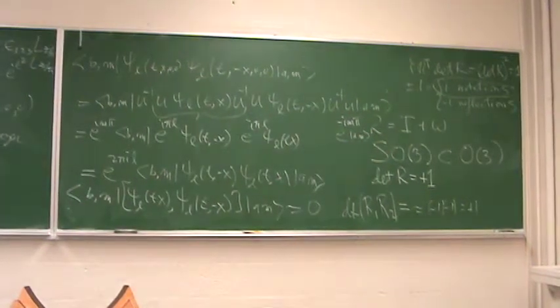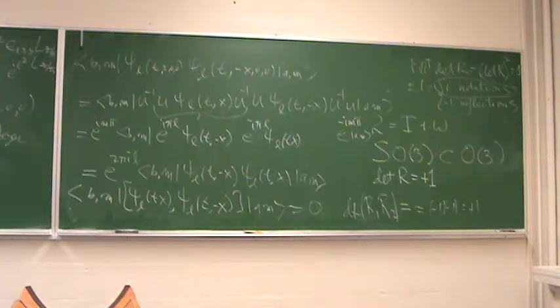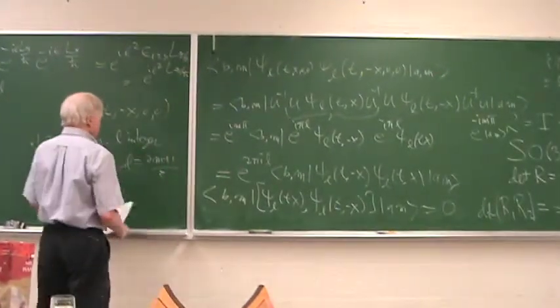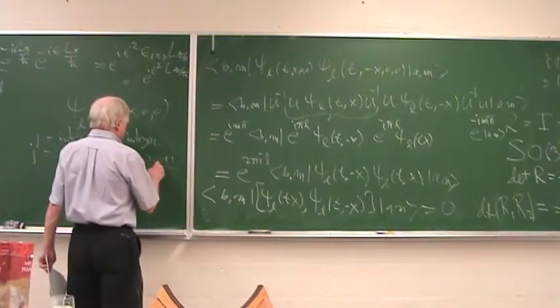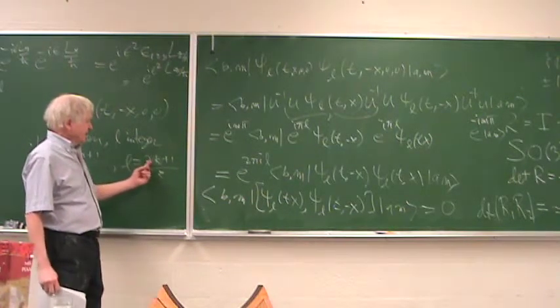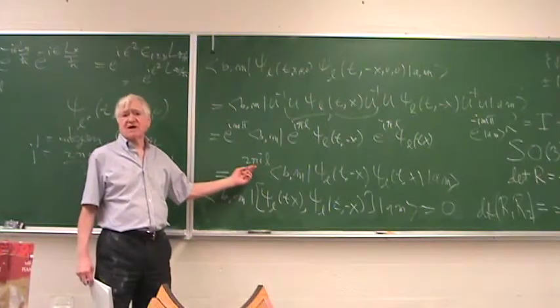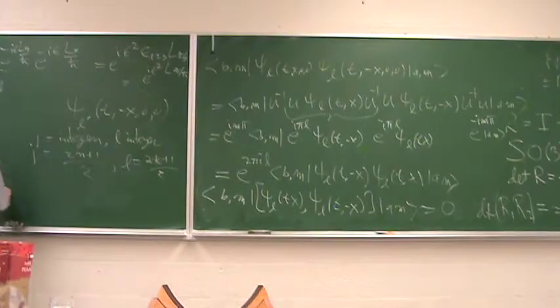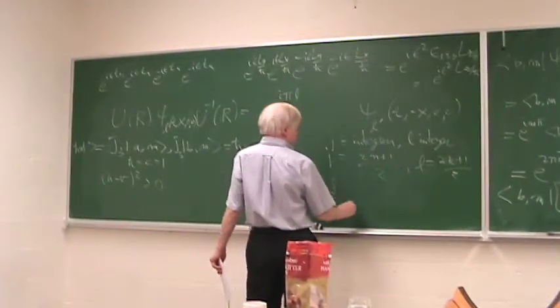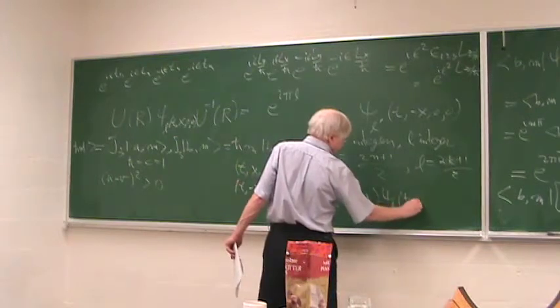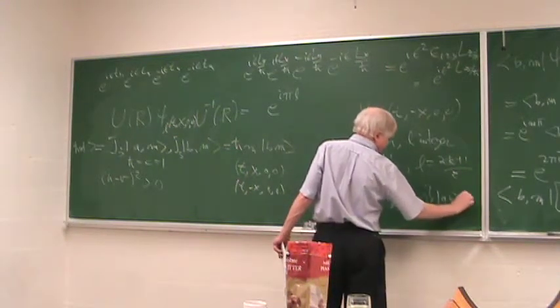On the other hand, suppose j is 2n plus 1 over 2. Then l is some 2k plus 1 over 2. In that case, 2l is then an odd integer. So this whole thing is an odd integer times i pi. That's minus 1. Then when we pull it over to the other side, we get the matrix elements of the anti-commutator vanish.